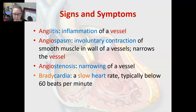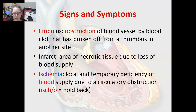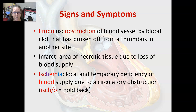An embolus is an obstruction of blood vessels by a blood clot that has broken off from a thrombus at another site. A thrombus is a blood clot that stays in one site, while an embolus is a chunk of a blood clot that travels. If it gets lodged in the lungs, you get a pulmonary embolus. If it gets lodged in the coronary vessels of the heart, you can get a heart attack. If it gets lodged in the brain arteries, you could get a stroke.